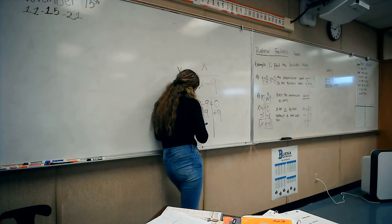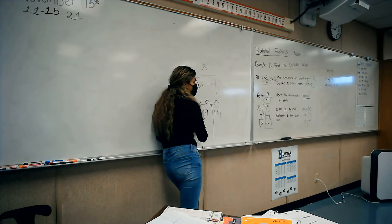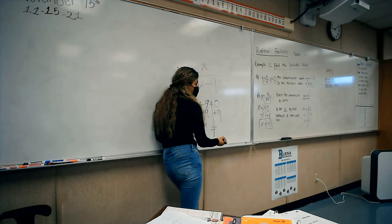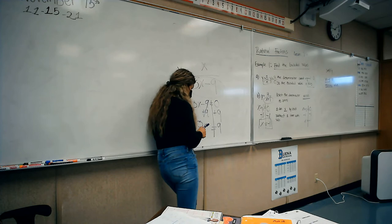Remember what you do to one side, you need to do to the other. Negative 9 and positive 9, they cancel out. So I'm left with 3x equals what's 0 plus 9? 9.